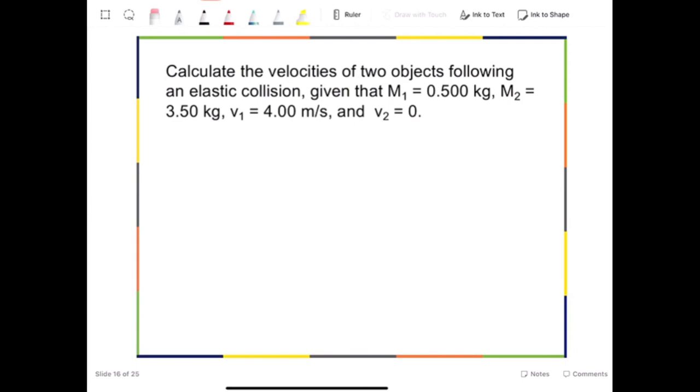So M₁ equals 0.500 kg, M₂ equals 3.5 kg, and v₁ is equal to 4.0 m/s, and v₂ equals 0. So v₁ and v₂ both are initial velocities of these two objects. We are looking for the velocity after the collision.